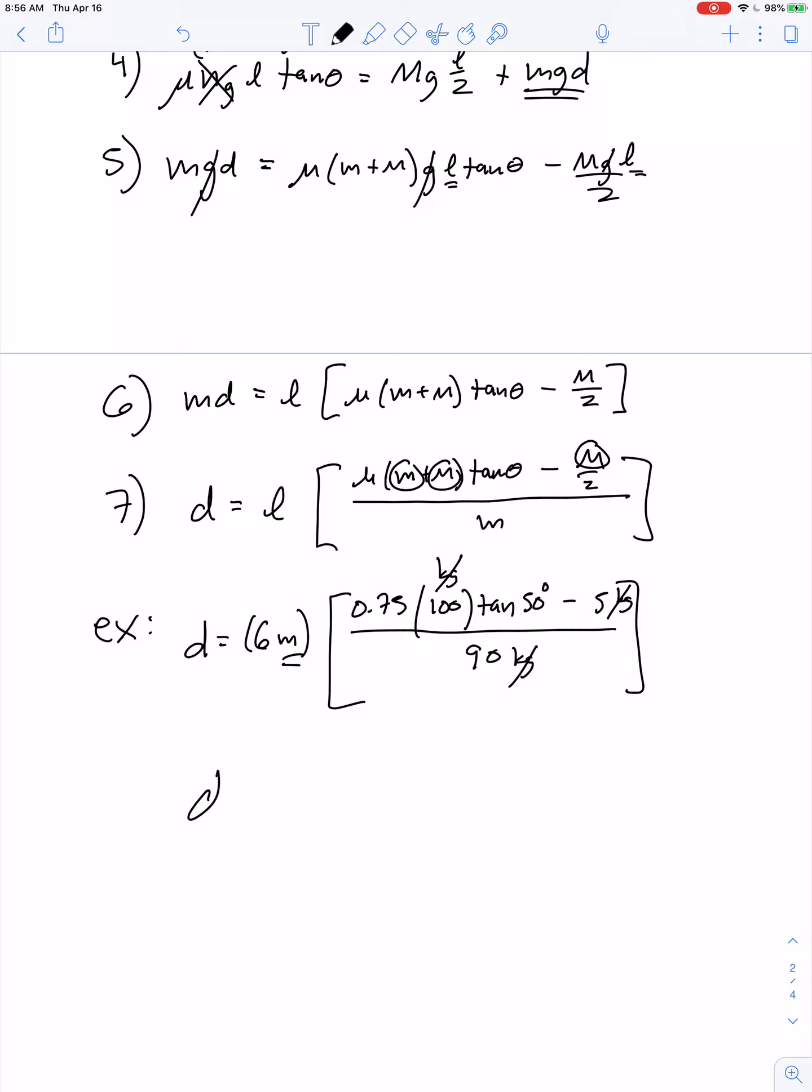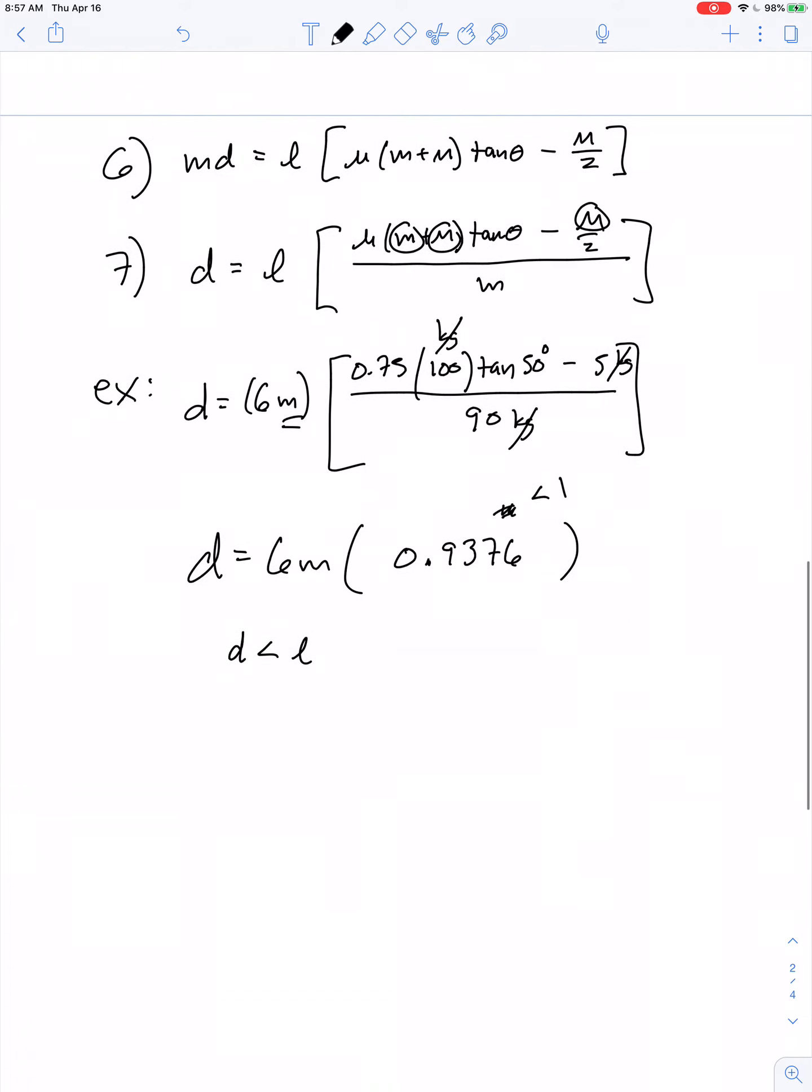I get d equals 6 meters multiplied by 0.9376, and since this is less than 1, it means d is less than L. So he doesn't quite climb safely to the top of the ladder. In fact, the maximum d would be equal to about 5.63 meters.